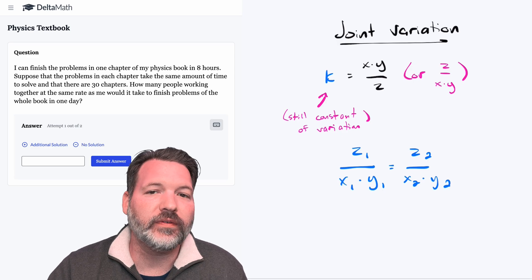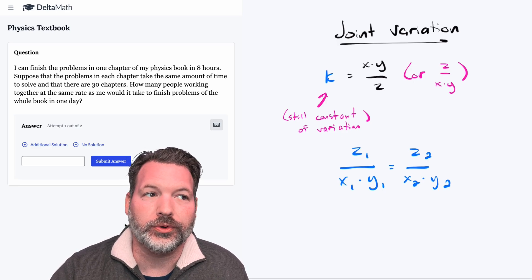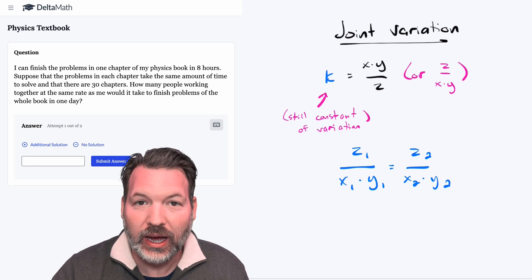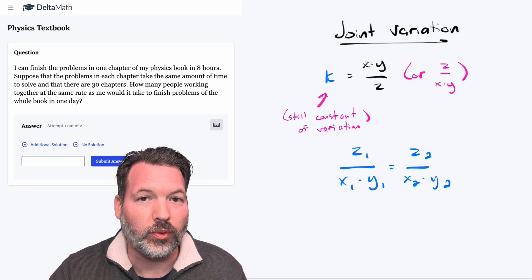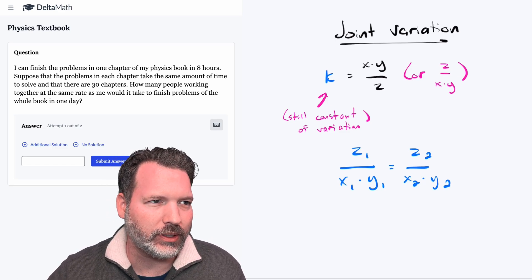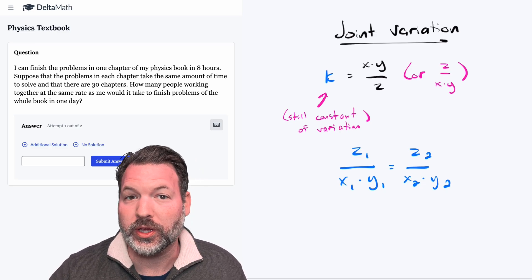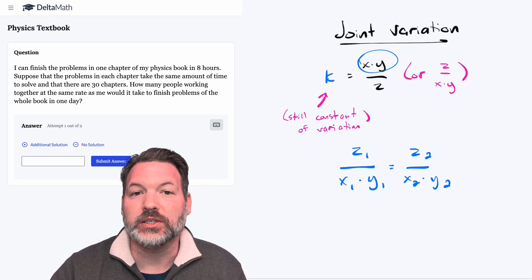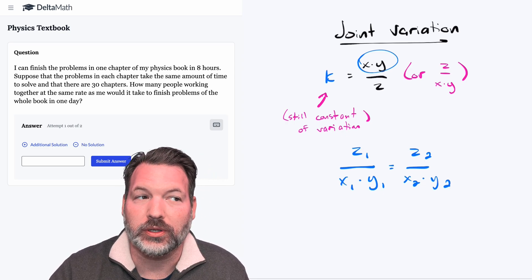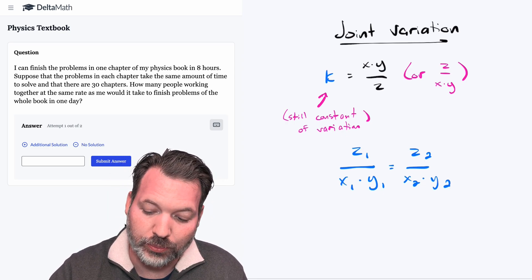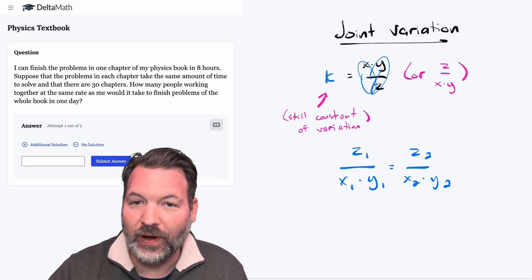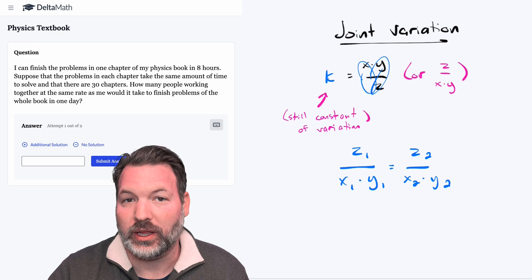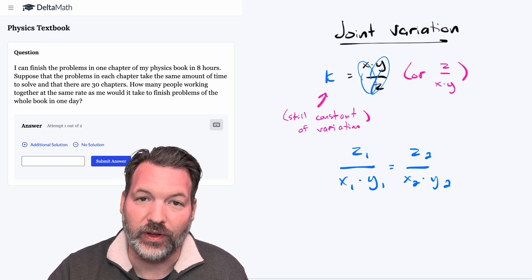We still have a constant of variation, but now it's going to equal one of those quantities — we'll call it z — divided by x times y, the product of the other two quantities. Or the reciprocal; it doesn't really matter, it depends on context which way you set it up. What matters is: anything we are multiplying is related by inverse variation, because that represents a constant product. But anything we're dividing is a constant ratio, and that relationship is direct variation.